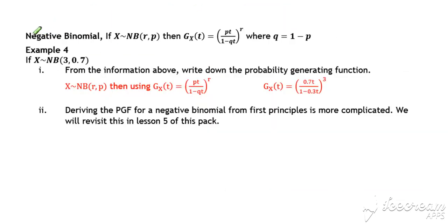So last one of the set, the negative binomial. Again, quotable result. If we've got a negative binomial with parameters r and p, our probability generating function is p times t over 1 minus q times t to the power of r.